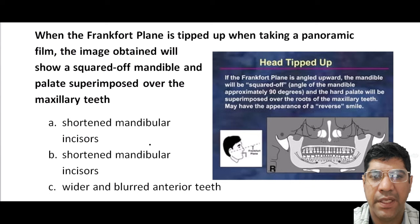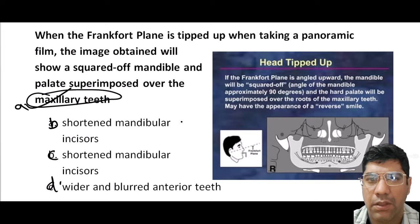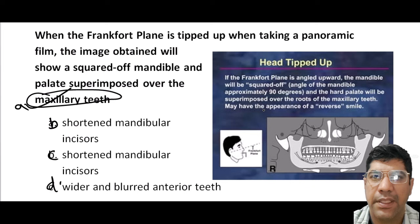When the Frankfurt plane is tipped up while taking a panoramic image, the image obtained will show the floor of the mandible and palate superimposed over the maxillary teeth. The Frankfurt plane is an imaginary plane that ensures the patient's head is properly positioned. If tilted upward, it can affect the alignment of the x-ray, causing the lower jaw and upper jaw to appear as if they overlap each other in the x-ray.